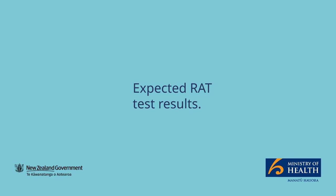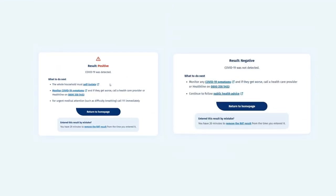Expected RAT test results. Two results can be expected from your RAT test: result positive, or result negative. Below your result are instructions on the next steps following your test.